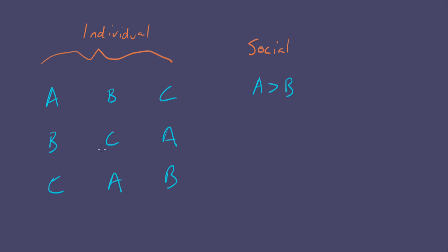What about B versus C? One person ranks B over C, and two people rank B over C — that's already a majority, so B is ranked over C. And finally, what about A and C? One person ranks A over C, but two people rank C over A. So C is ranked over A.